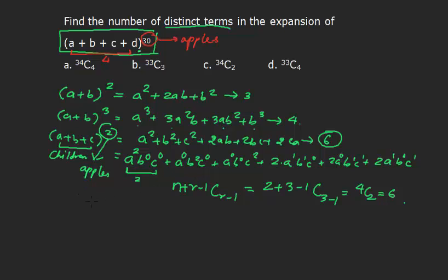Again, using the same formula, that will be 30 + 4 - 1 choose 4 - 1, so it is 33C3 and which is nothing but option b. Thank you.